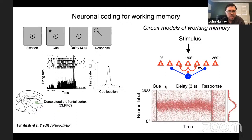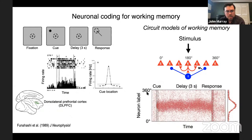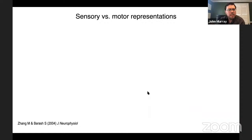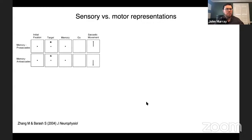Even since these early studies there were questions about what is really being maintained. In the memory-guided saccade task, one could ask: is what's held in memory a sensory representation of where the visual cue was, or a motor representation of where the subsequent eye movement will be? A study from Barash's group used a memory-guided prosaccade interleaved with a memory-guided antisaccade, in which the subject was required to make an eye movement in the opposite direction of the sensory cue. This allowed them to tease apart, by looking at delay-period neuronal activity, whether it tracked where the cue appeared or where the subsequent eye movement would be.